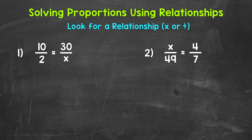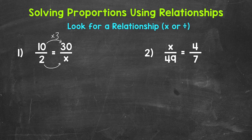These just happen to be ratios in fractional form, and they form a proportion. So let's take a look at the 10 and the 30. Is there a relationship there that either uses multiplication or division? Well, yes — we know 10 times 3 equals 30. So whatever we do to those top terms, we can do to the bottom terms in order to figure out what x equals.